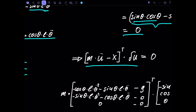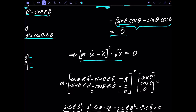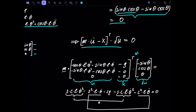Now we combine this information to get the equation of motion. We write everything out: factoring out m, we have our acceleration terms, then the applied force x transposed and multiplied by the virtual displacements du. After performing the multiplication, we can see that we have a sine(θ)·cosine(θ)·l·θ̇² term and a minus sine(θ)·cosine(θ)·l·θ̇² term.